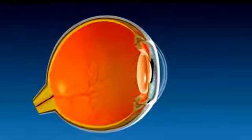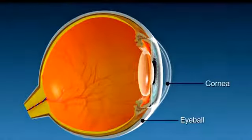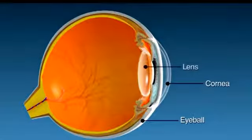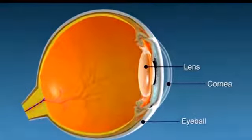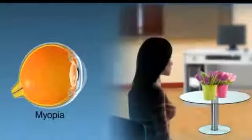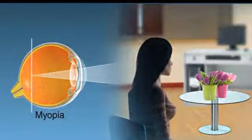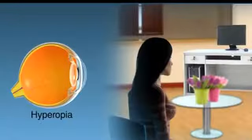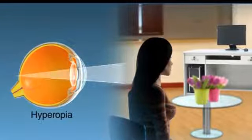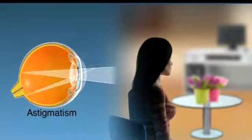Refractive errors are caused by an imperfectly shaped eyeball, cornea or lens. There are three basic types of refractive errors: Myopia, where only nearby objects are clear or distinct; Hyperopia, where only objects far away are clear or distinct; and Astigmatism, when images are blurred regardless of whether they are near or far.